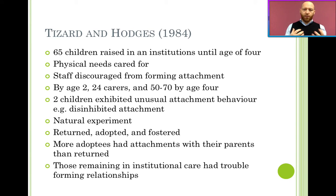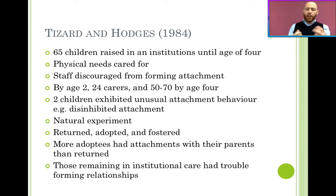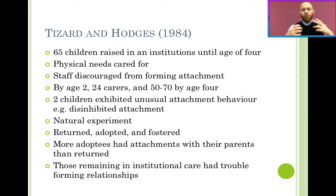One of the early studies that investigated this was Tizard and Hodges. They found 65 children who were raised in institutions until the age of 4. What was interesting about these institutions is that whilst they provided a lot of physical care and had a stimulating environment with toys and things, staff would be discouraged from forming attachments. The predominant belief was that if children formed secure attachments and then the staff members left, that would be more damaging than if the children didn't form attachments in the first place.